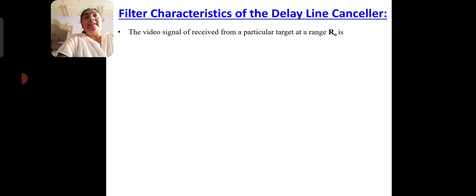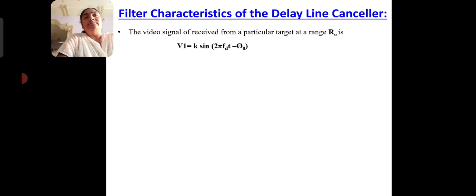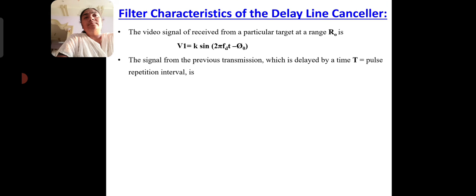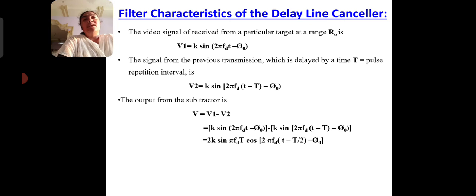Now we will see the filter characteristics. The video signal received from a particular target R0: V1 equals K sin(2π·f_D·T − φ). The signal from the previously stored sweep with delay time T equal to 1/PRF is V2, using T minus capital T.